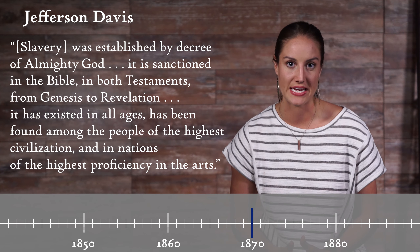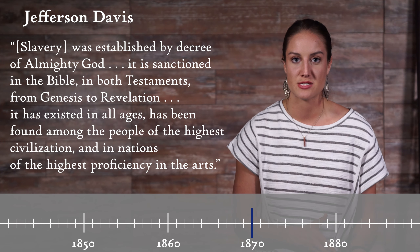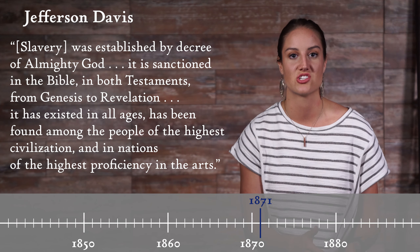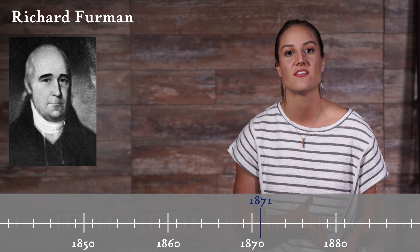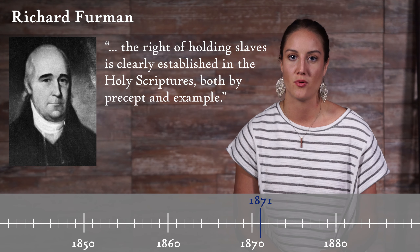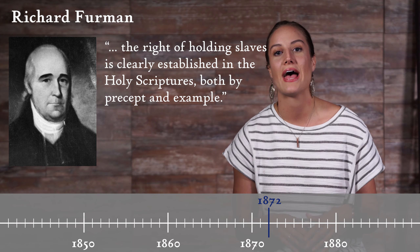With new voting rights and the ability to hold office, Blacks slowly began to hold political office, though still at less than proportional rates. Sadly, segregation extended into the church as well. Jefferson Davis, the president of the Confederate States of America, remarked that slavery was established by the decree of God Almighty — sanctioned in the Bible, in both testaments, from Genesis to Revelation, and had existed in all ages among people of the highest civilizations. A president of the South Carolina Baptist Association, Richard Fuhrman, believed that the right of holding slaves is clearly established in the Holy Scriptures, both by precept and example. At the same time, many Christians were heavily involved in abolition, and some denominations had already split over the issue of slavery.